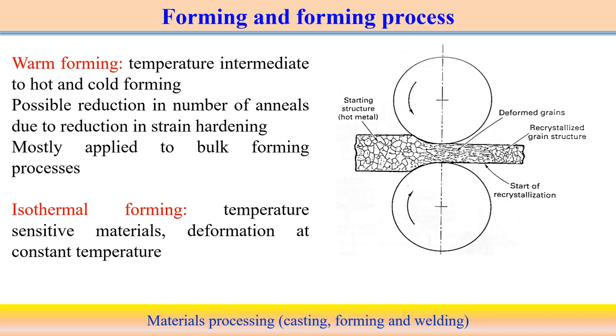Cold and hot forming processes are commonly followed in metal forming operations. The names of forming processes include rolling, forging, drawing, deep drawing, bending, and extrusion — each having a different mode of deformation. There is also another type called the warm forming process, which is basically between the hot and cold forming process, with temperature in between those two conditions.